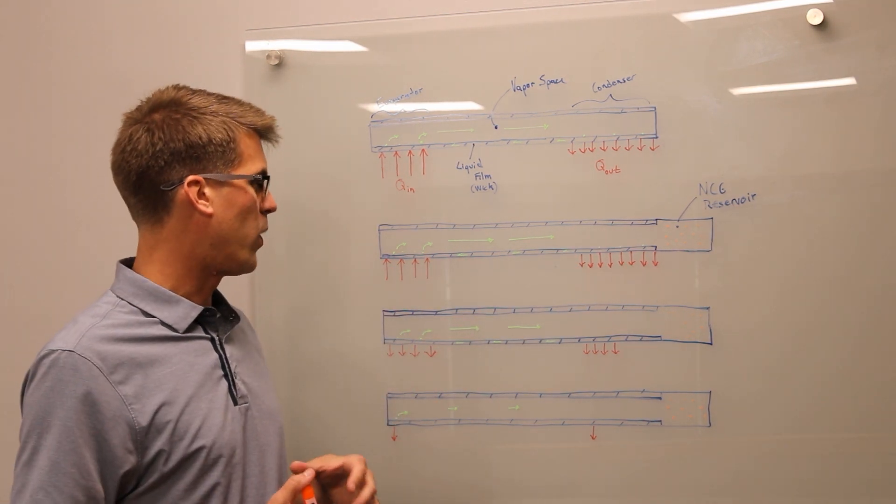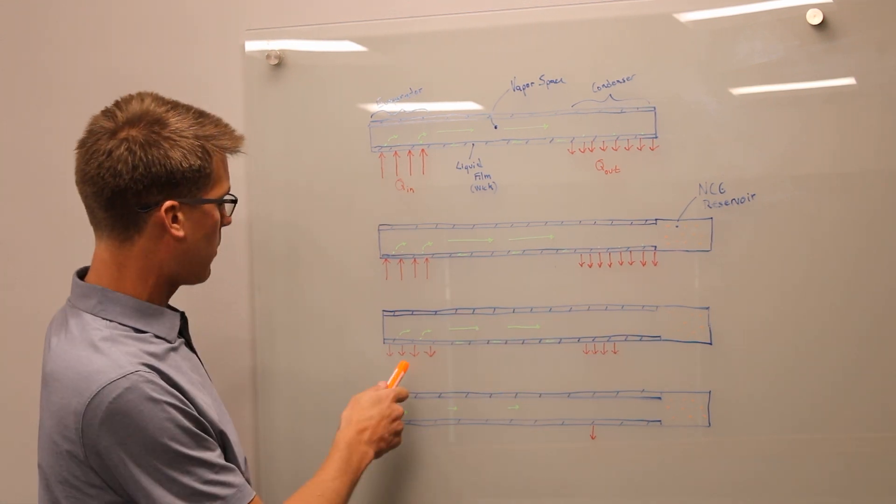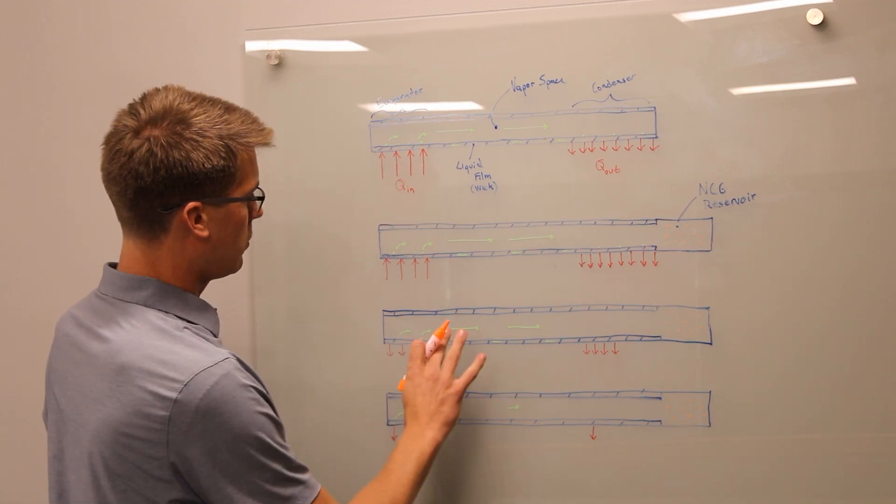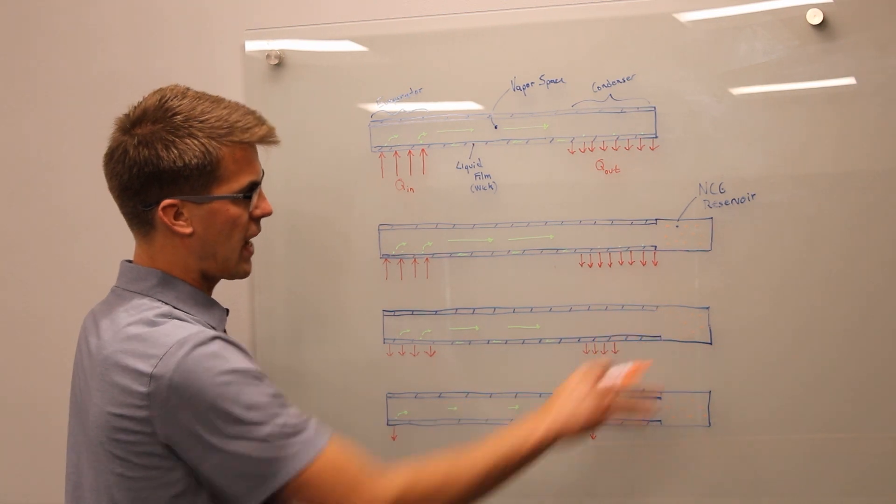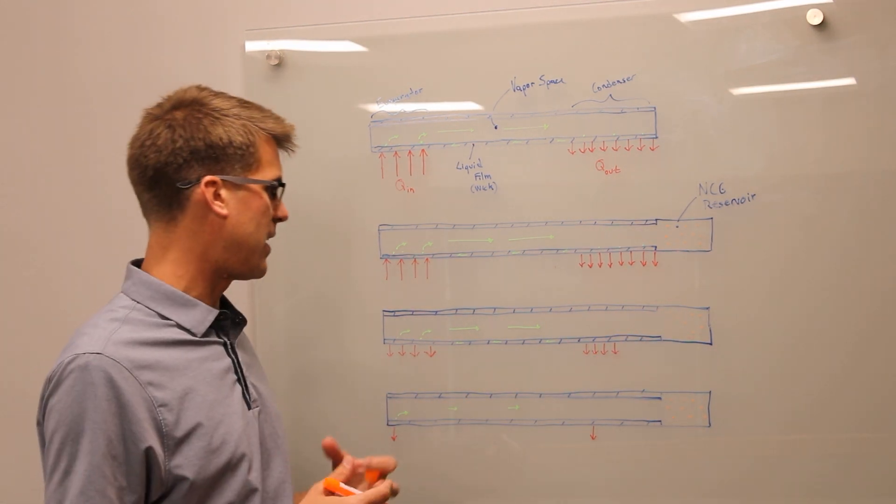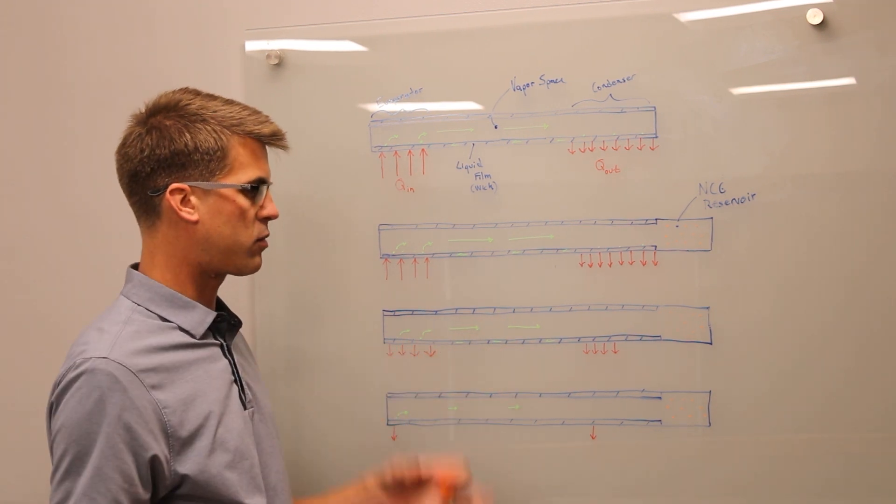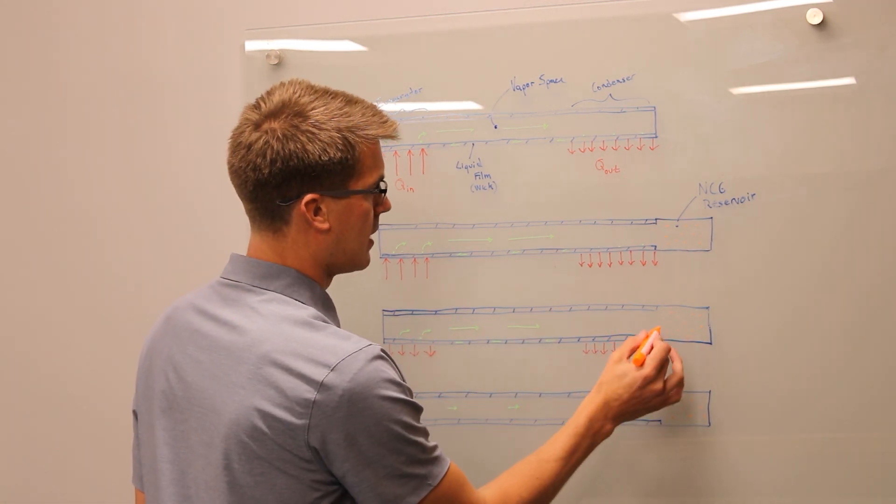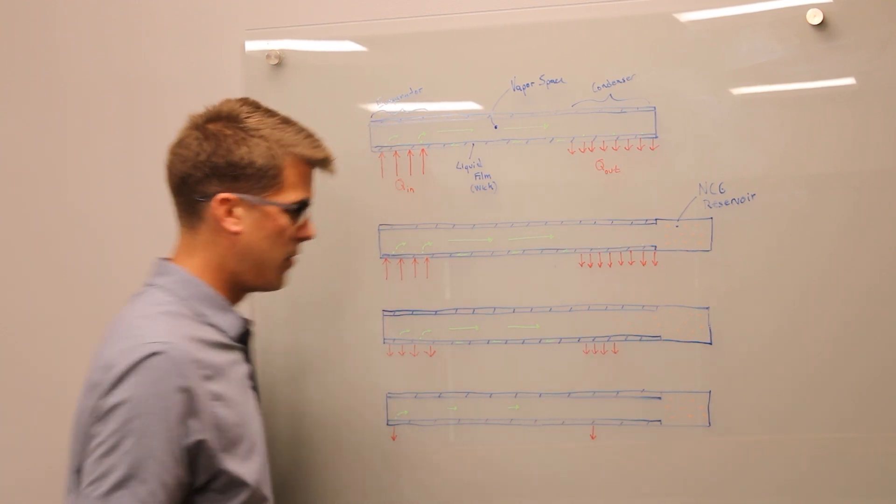What a VCHP with the non-condensable gas reservoir will allow you to do is that when the power is decreased, that will actually reduce the force of the pressure from the vapor pushing the non-condensable gas into the reservoir. Because the heat pipe operates in two phase under saturation, a decrease in the power will decrease temperature and therefore pressure. A decrease in the pressure will allow the non-condensable gas to expand outside of the reservoir.